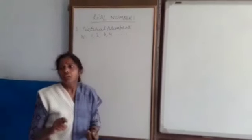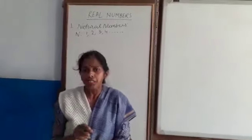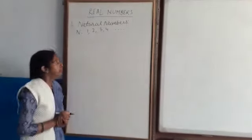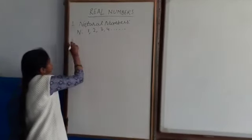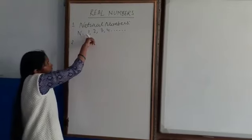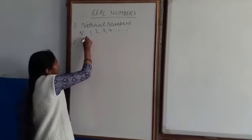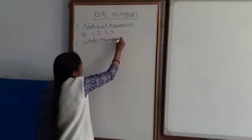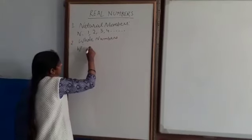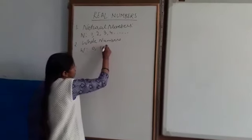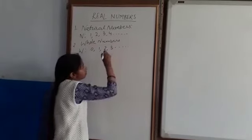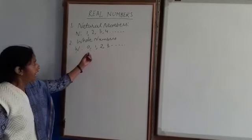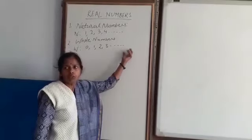If I am having rupees 100 and I spend all the money, I am left with nothing. Nothing means 0. So if I add 0 to the pocket of natural numbers, then we get whole numbers. Whole numbers written by W: 0, 1, 2, 3 and so on. So again, the smallest whole number is 0 and we cannot define the greatest whole number.